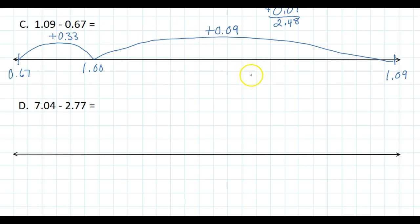Now I just add these two hops up and we'll find out what my answer is. So it's 0.33 and 0.09. Add them up. 9 and 3 is 12, carry the 10. 10, 3, and 1 is 4. Decimal place there and 0. So it's 0.42.